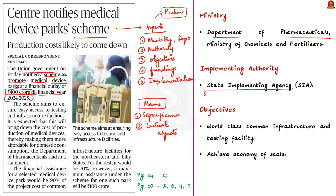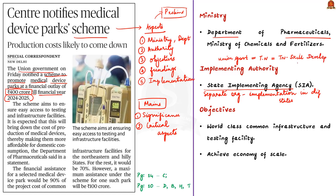For example, the scheme on skill development in the electronics systems design and manufacturing sector was notified by the union government but implemented in Tamil Nadu by the Tamil Nadu Skill Development Corporation. That is what 'implemented by the state implementing agency' means.